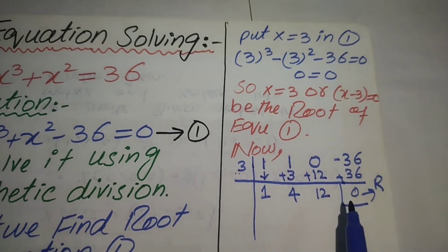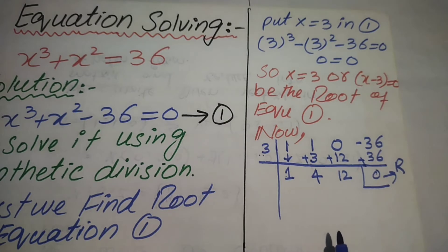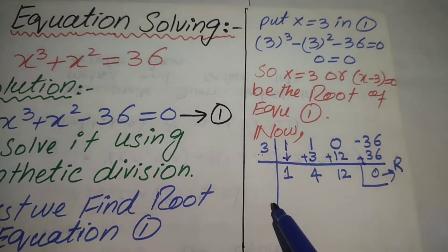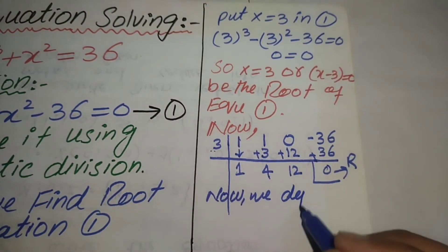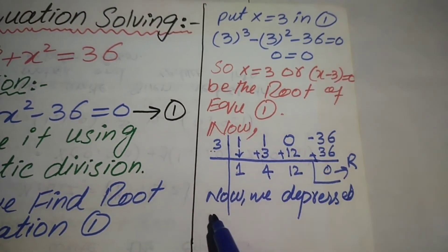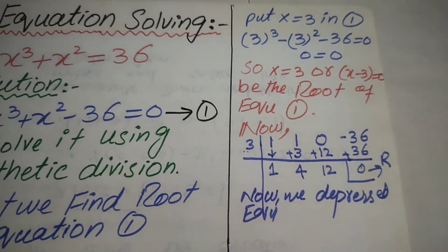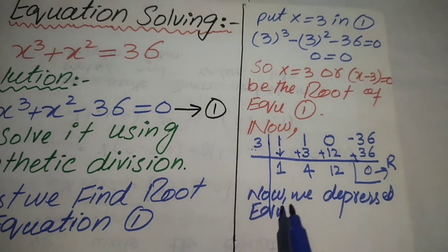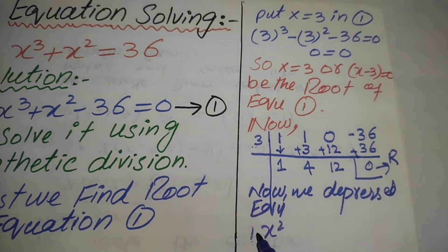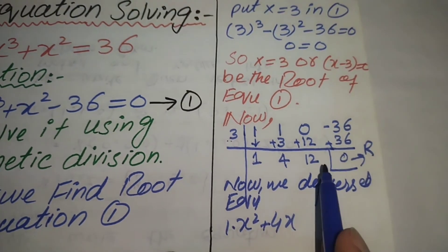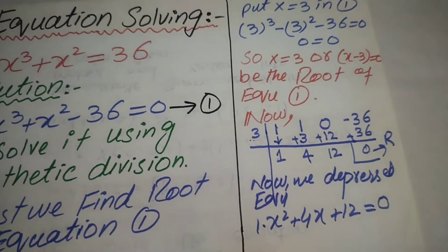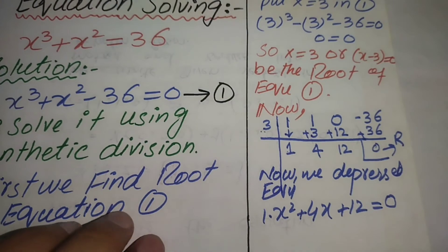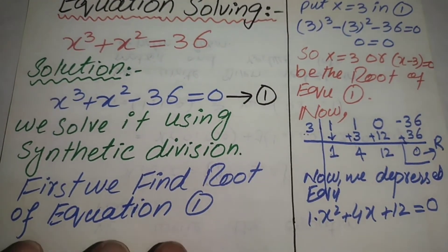When applying synthetic division, the remainder is always zero. After that, we write the depressed equation. The first coefficient is for x², the second is the coefficient of x, and the last is the constant term, all set equal to zero.